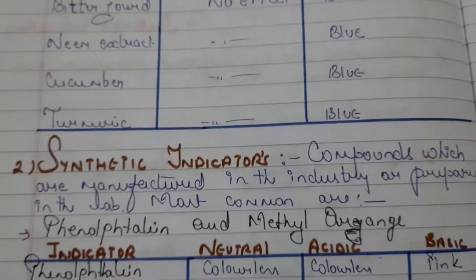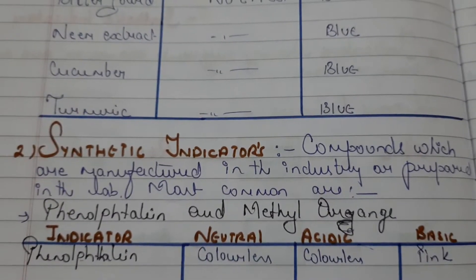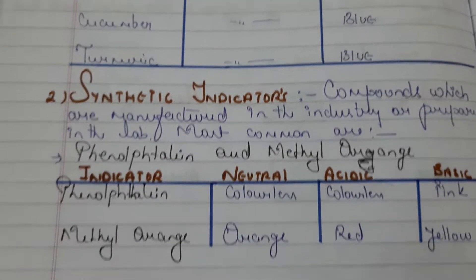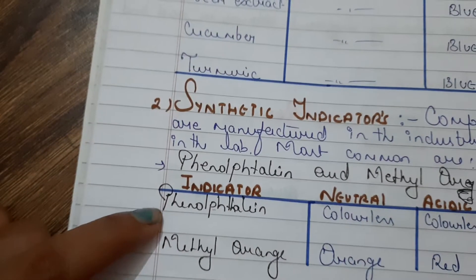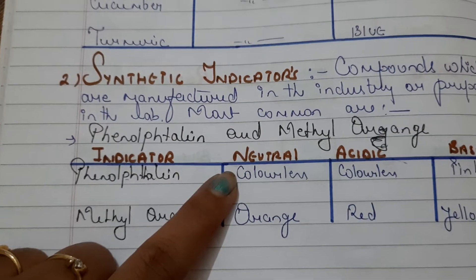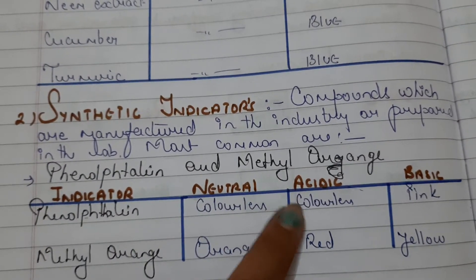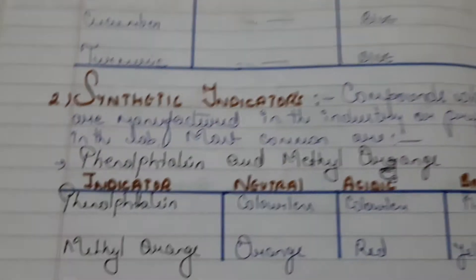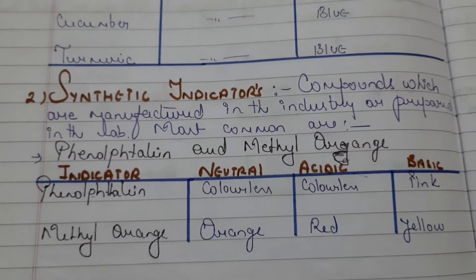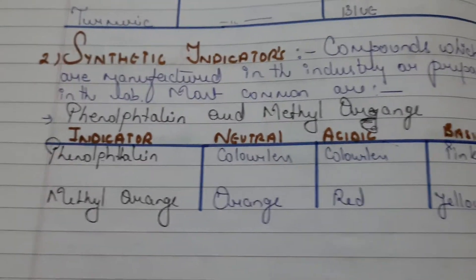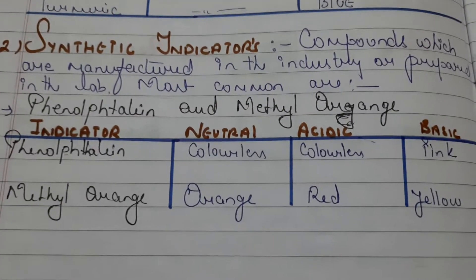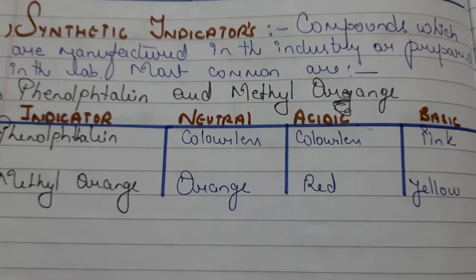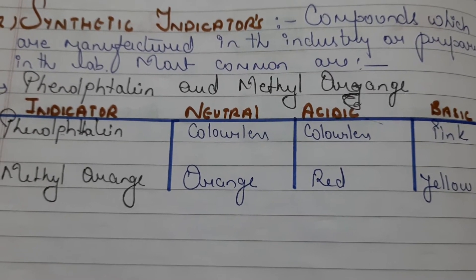Synthetic indicators are compounds manufactured in industry or prepared in the lab. The most common are phenolphthalein and methyl orange. Phenolphthalein is colorless in neutral and acidic solutions, but turns pink in basic medium. So if phenolphthalein is colorless, the solution is acidic in nature.